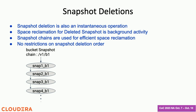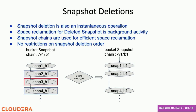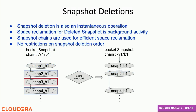The snapshot deletion is also an instantaneous operation, and actual space reclamation happens in the background using the snapshot chain. We support out-of-order deletion — you don't have to delete a snapshot at the very beginning or end of the chain. You can delete any random snapshot anywhere in the chain. In this example, I am deleting Snap 3, and when doing space reclamation I only need to look at the immediate previous and immediate next snapshot, not all snapshots in the chain.